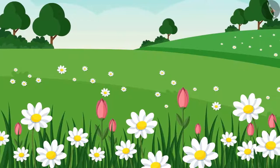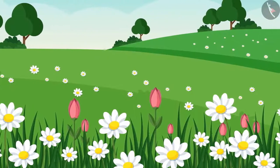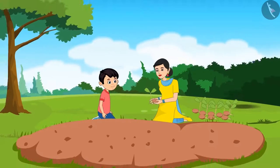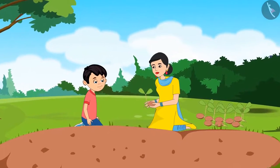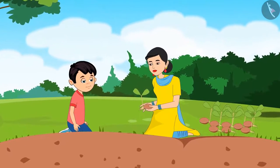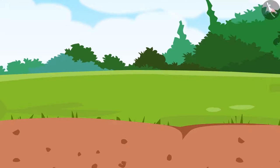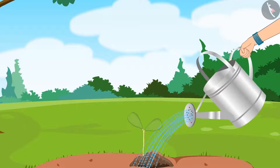So children, do you know how important it is to plant trees? Yes, today Chotu is planting saplings in the garden with his mother. Look at this Chotu, this is the way to plant saplings. After this we have to water them. Mom, even I want to plant saplings.